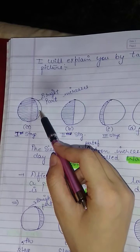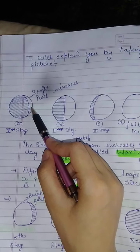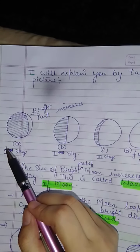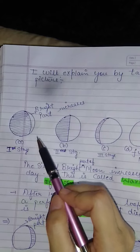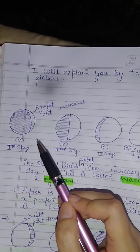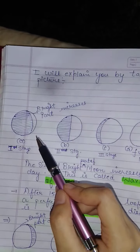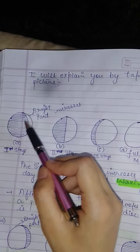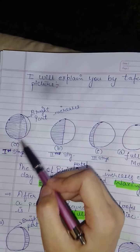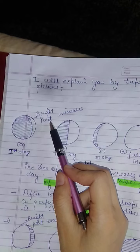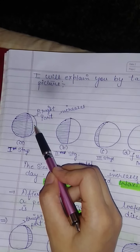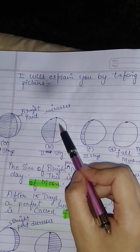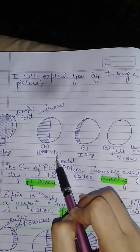In the diagram, the white portion represents the bright part. When the Moon was not visible we called it new moon. The next day after new moon, the bright part starts to appear — this is the first stage. The day after that, we start to see half of the bright part — this is the second stage.